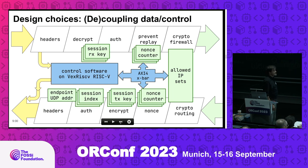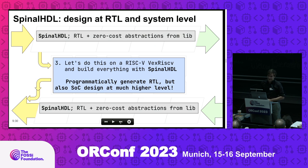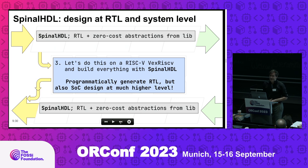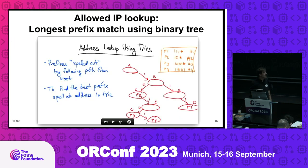The allowed IP sets are actually the most challenging part. We started with VexRISC and we liked it. We found out it's written in SpinalHDL — Charles is here. We found out it could help us enormously also in building the data path. I didn't have any experience programming SpinalHDL, but we found out it was very productive for setting up the data path. The most critical part is the allowed IP lookup, and I'd like to spend a few words on that.